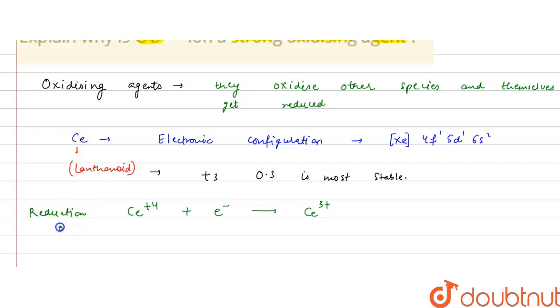This is the reduction of cerium 4+. So cerium 4+ reduces itself to cerium 3+ and it oxidizes the other species. Therefore it acts as a strong oxidizing agent.